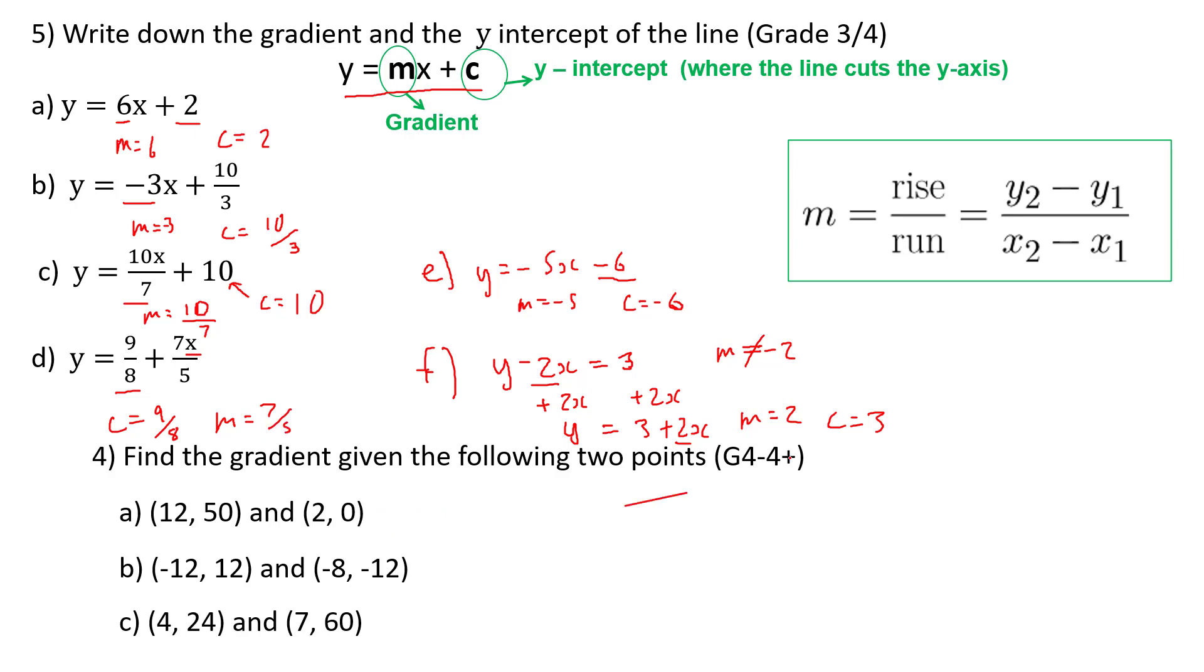Right, remember, we've got to use this formula for this point, the gradient. So this is the second y coordinate, that's the first y coordinate, that's the second x coordinate, and the first x coordinate. So y two is zero, minus y one, that's minus 50, all divided by two minus 12,